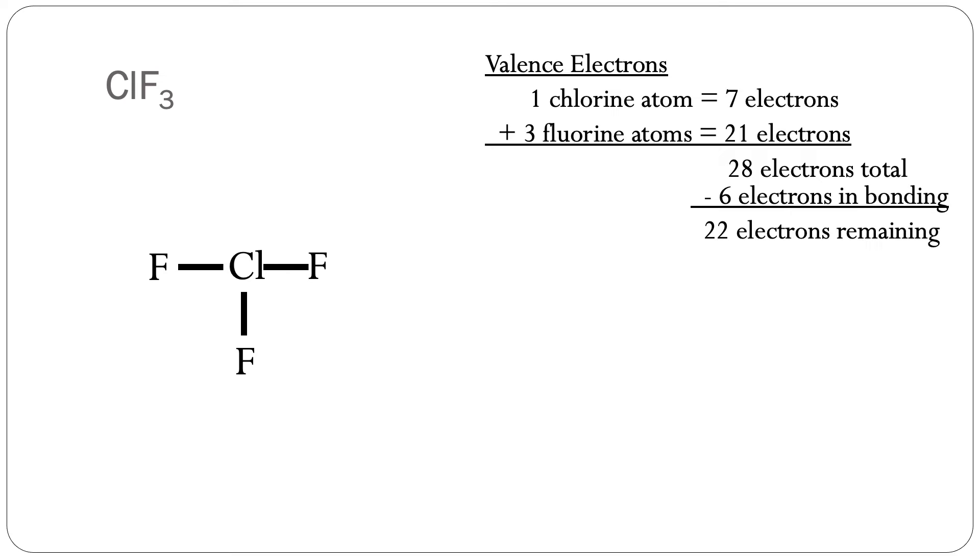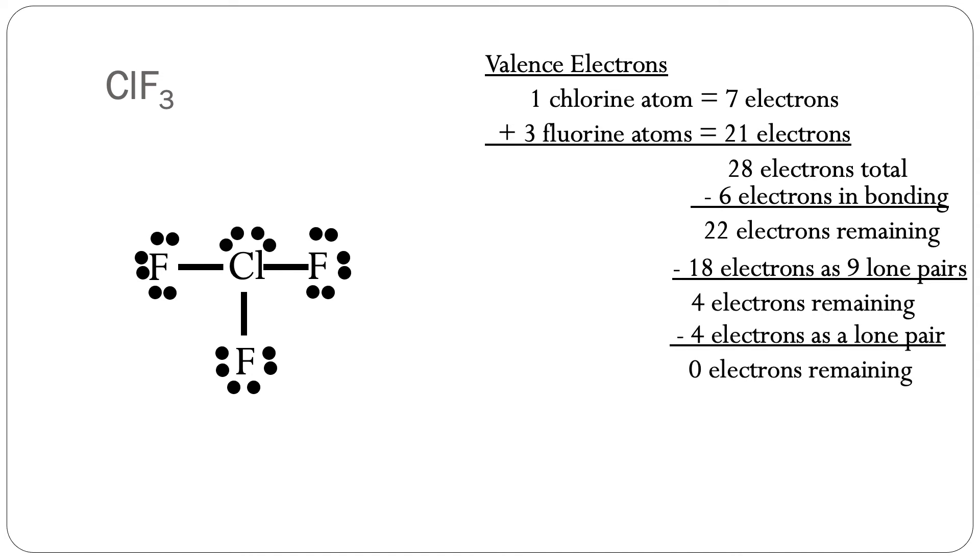We'll satisfy the octet rule for each fluorine atom by adding six electrons to each fluorine atom. There are 18 electrons as nine lone pairs. There are four electrons remaining. Those four electrons will go onto the center atom.